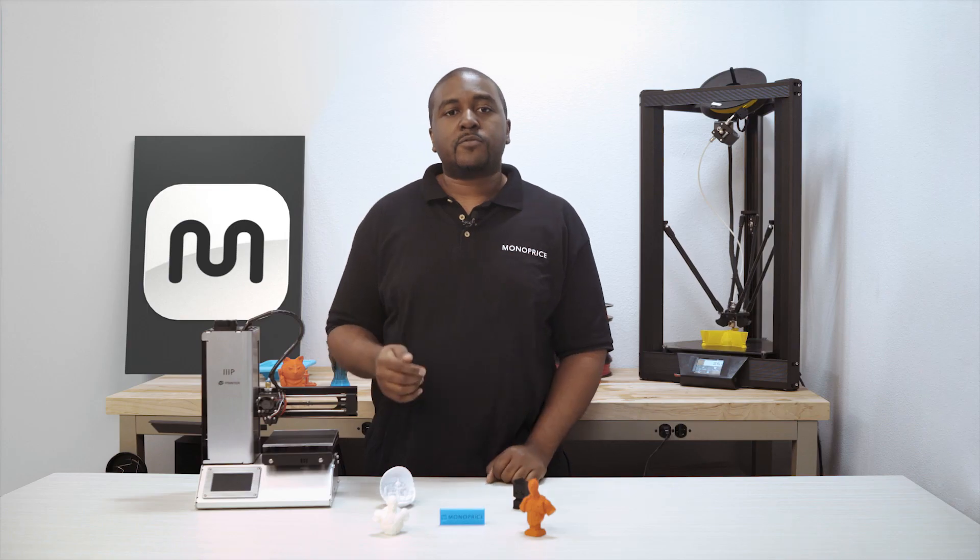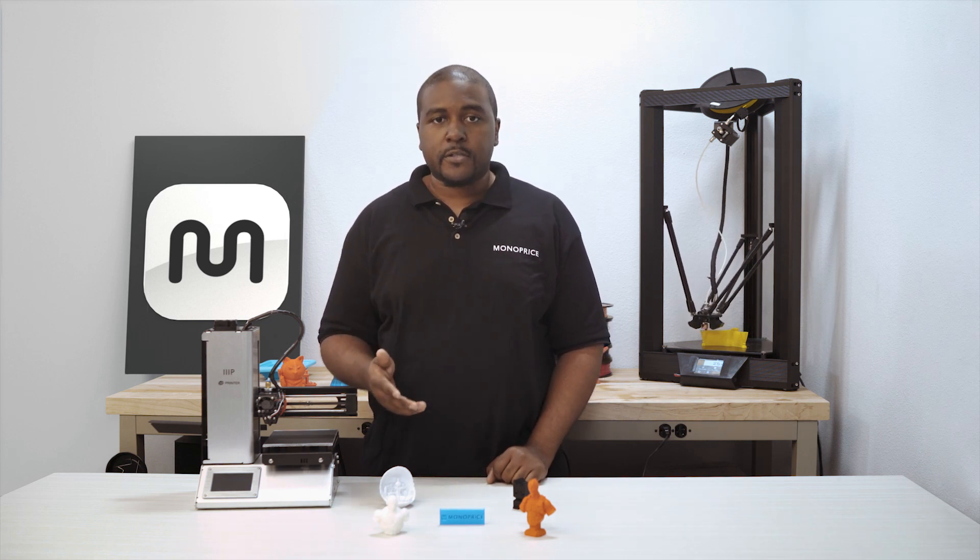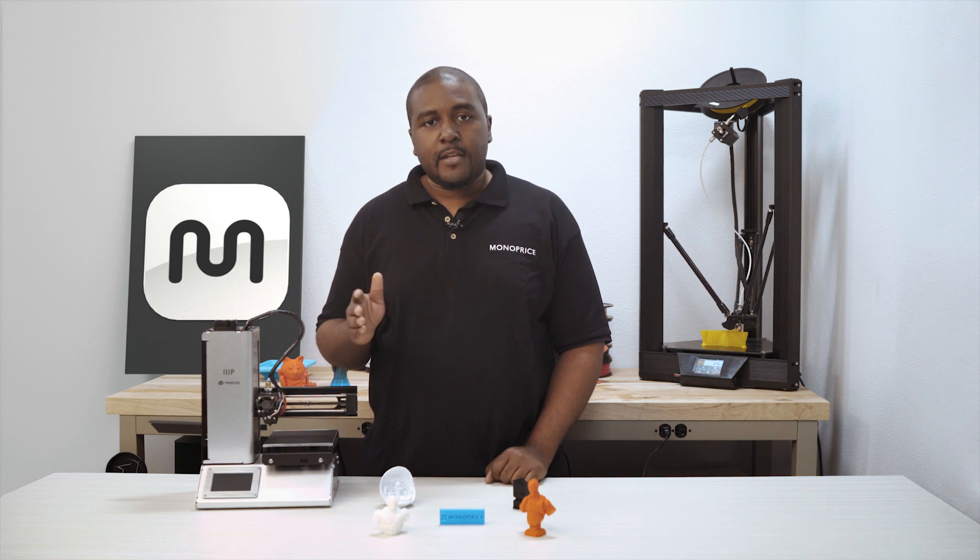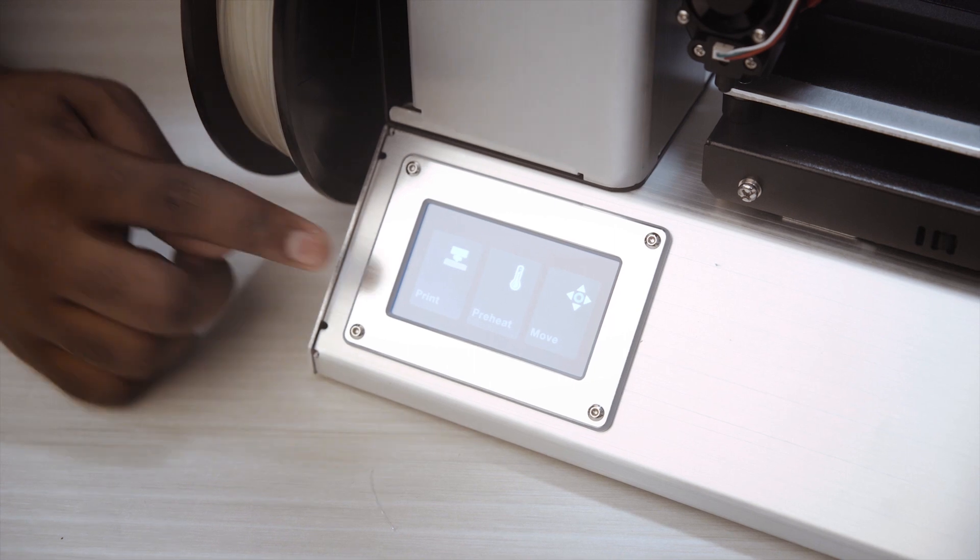Out of the box, the unit is ready to print. You will just want to run the new auto leveling function first to do so. Plug in the unit and navigate to the move menu where you will have all of the axis move functions.